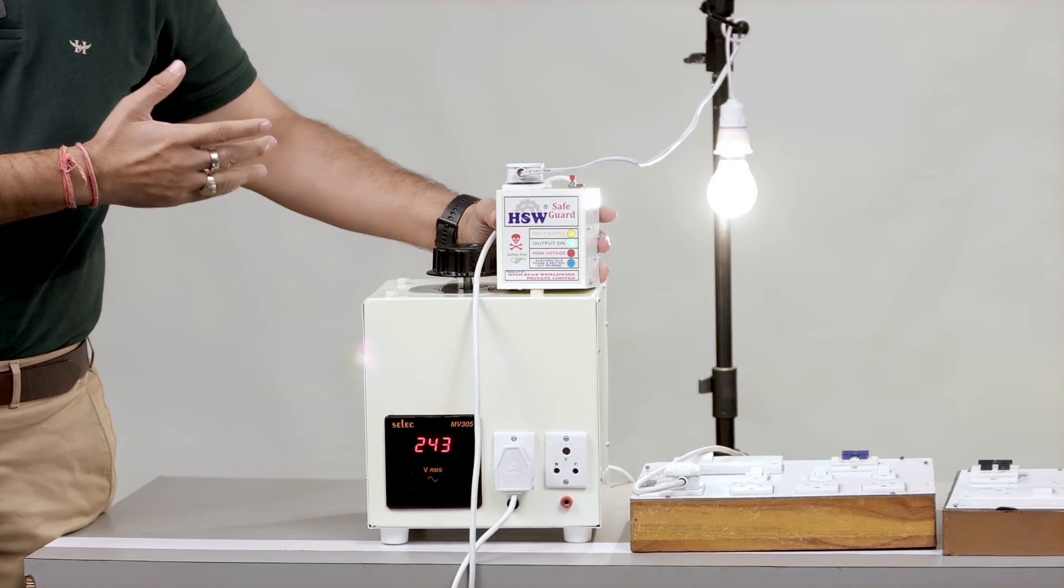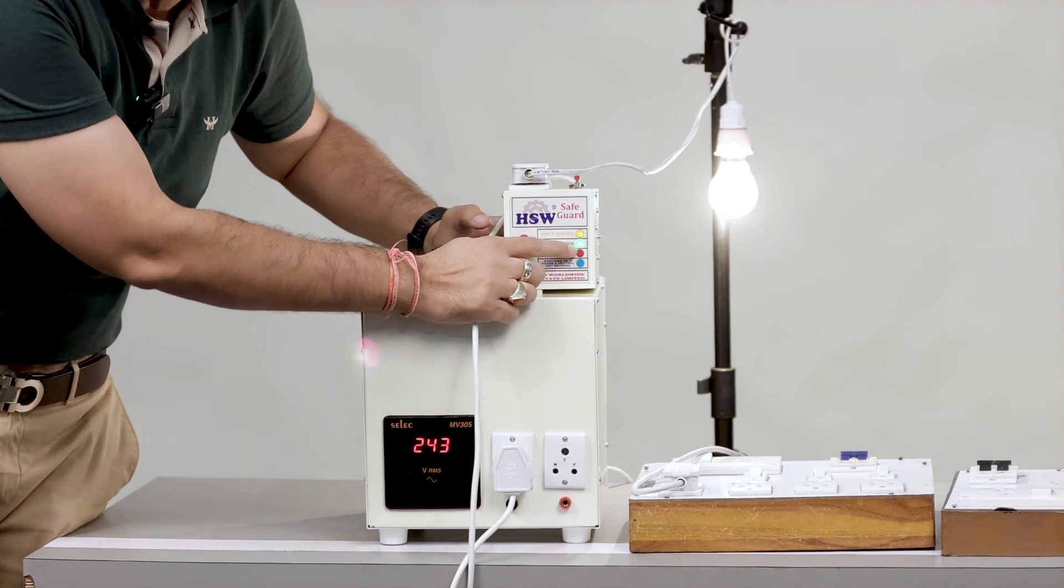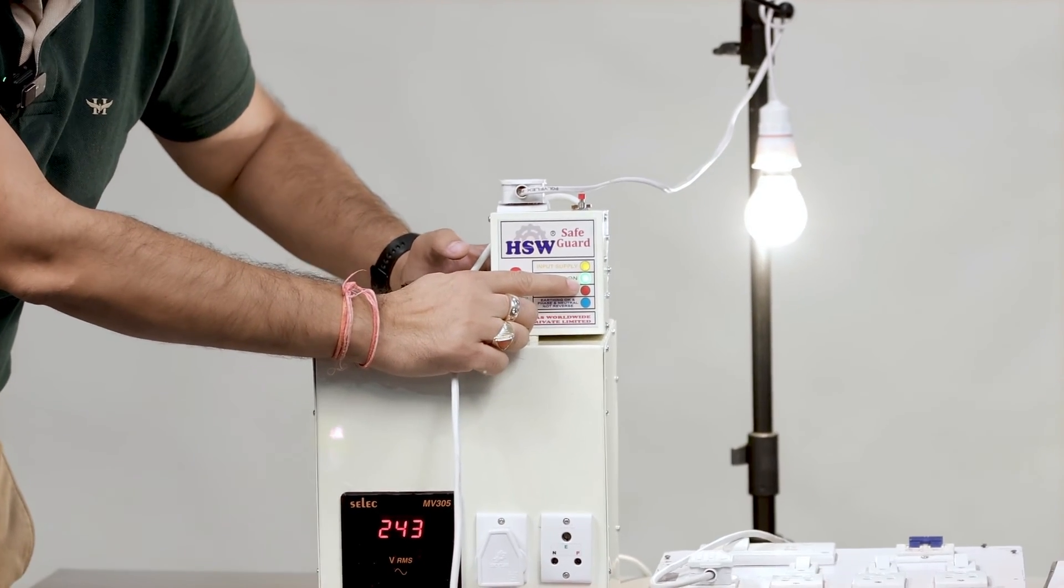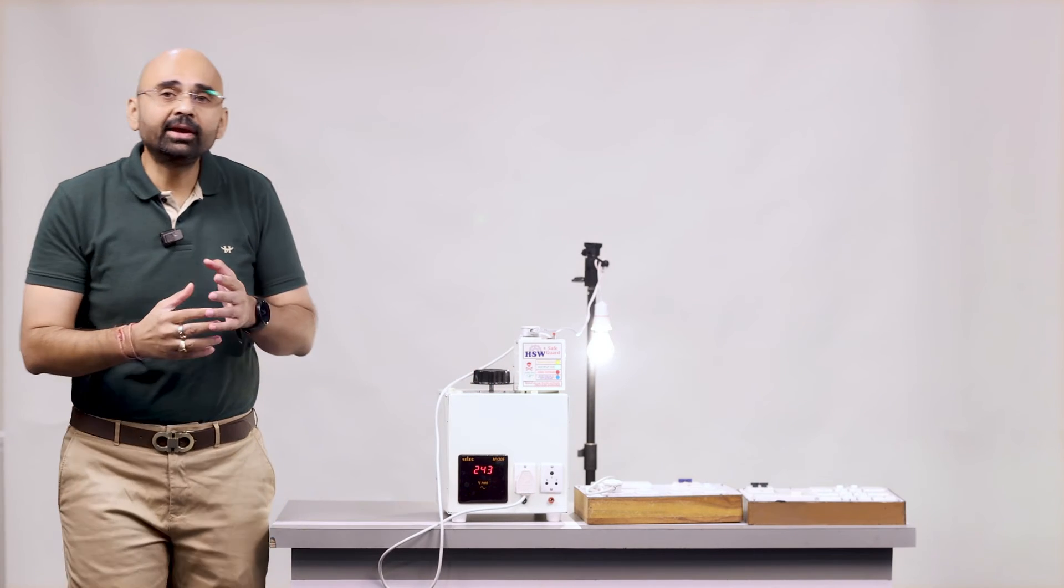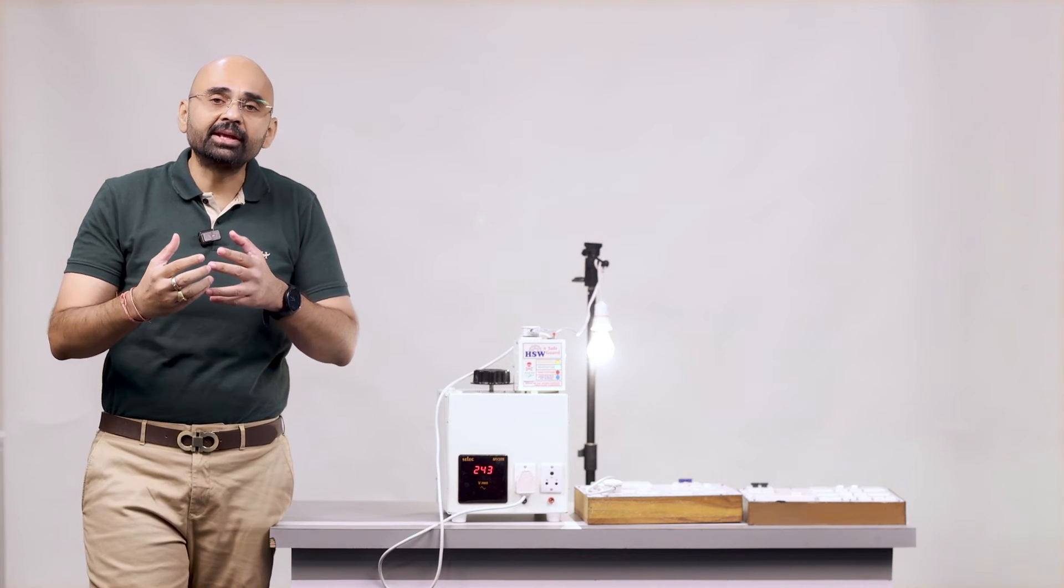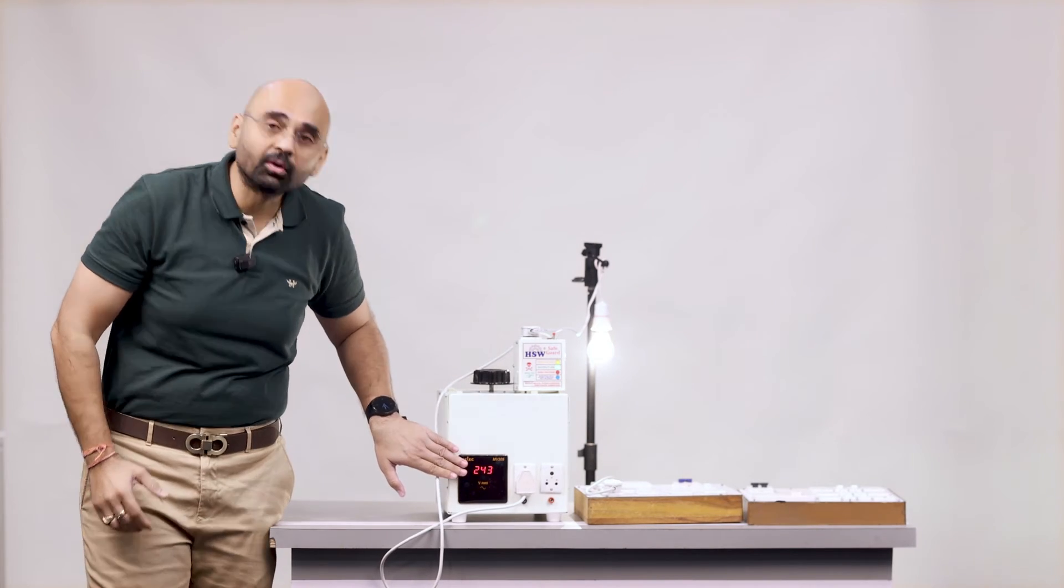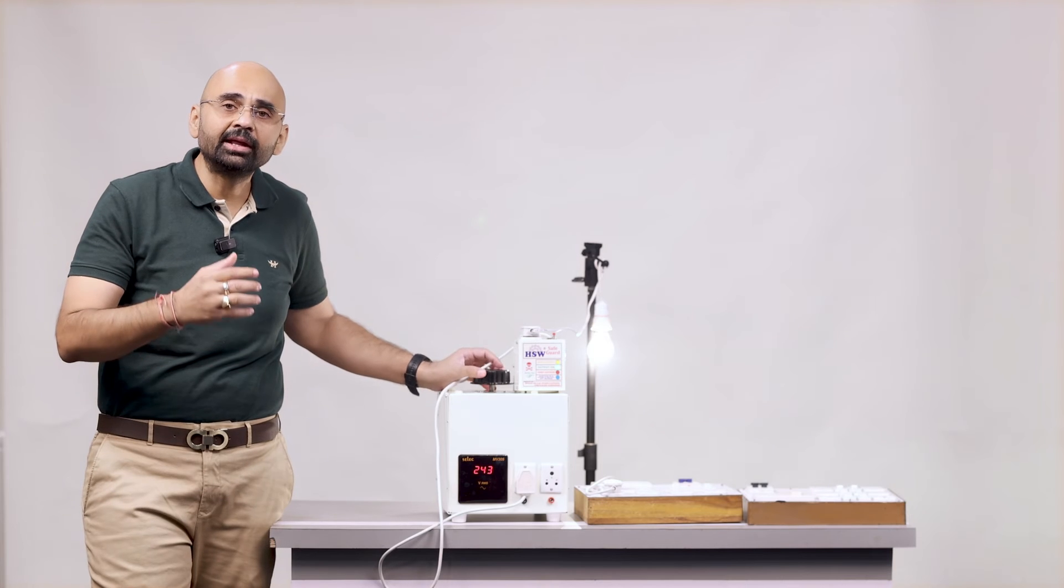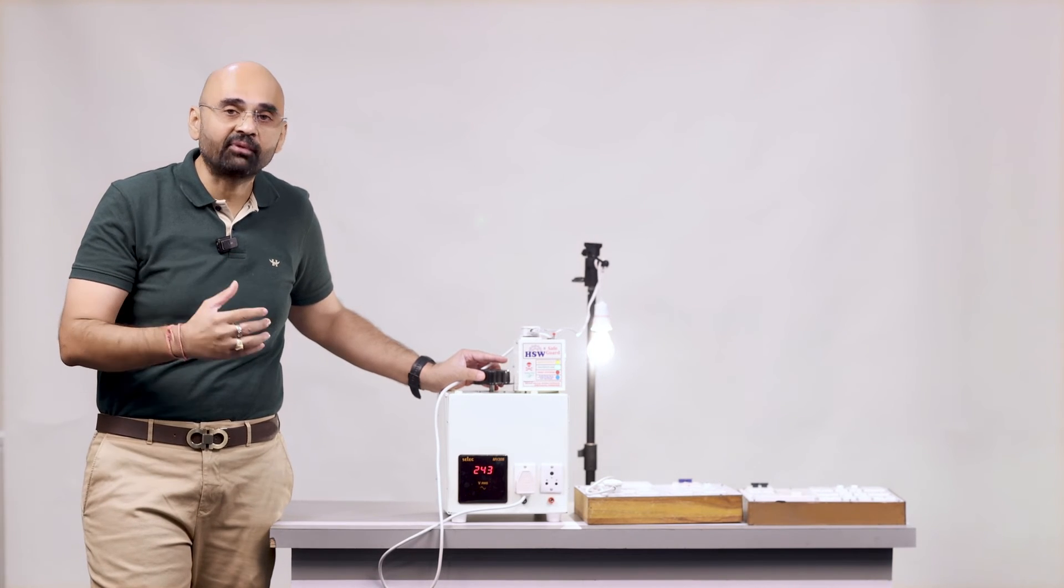So now you can see that light is on and over here you can see the output is on. Right now we will increase the input voltage slowly. Right now the input voltage is 243. So now we will increase it gradually so that you come to know what is the exact effect.